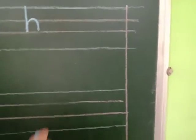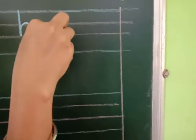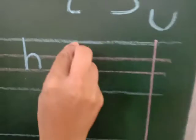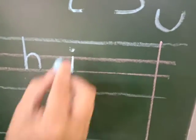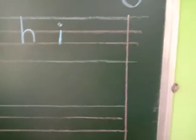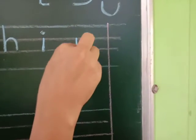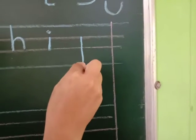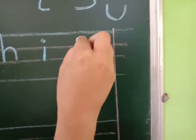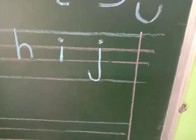Now small i. In the middle two lines you will draw a standing line, and then a dot — it becomes small i. Small j: downside three lines, standing line, curve line, and a dot. Small j.